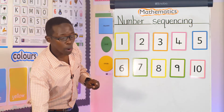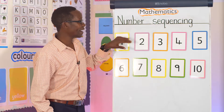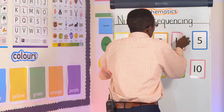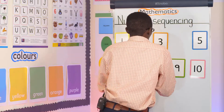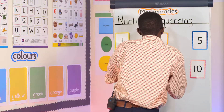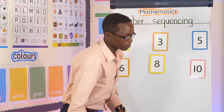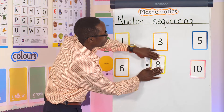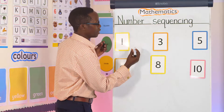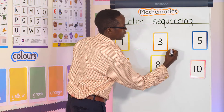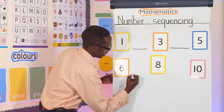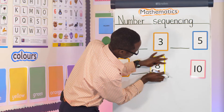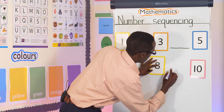Today, I want us to do something we call filling in the missing numbers. I want to hide you like this so that you may not see what teacher David is doing. Now, look here. When you look at these numbers, you find there are some numbers that are not here. Here we have a number that is not there, another one there — teacher has removed. Another one here, and another one here, and another number here.